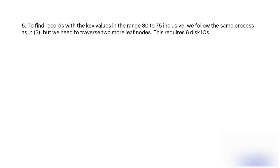Query 5: To find records with key values in the range 30 to 75 inclusive, we follow the same process as in Query 3, but we need to traverse two more leaf nodes. This requires 6 disk I/Os.